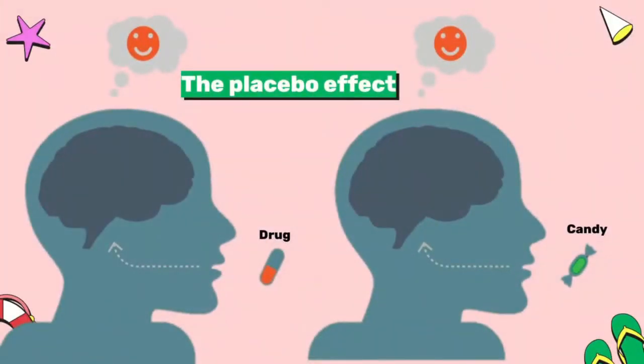An example is the placebo effect. What convinces us is what we believe to be true, and thus a sugar pill can actually bring about a healing effect. Consumers want to buy things that will provide hedonic value, in addition to simply doing what they desire to do.